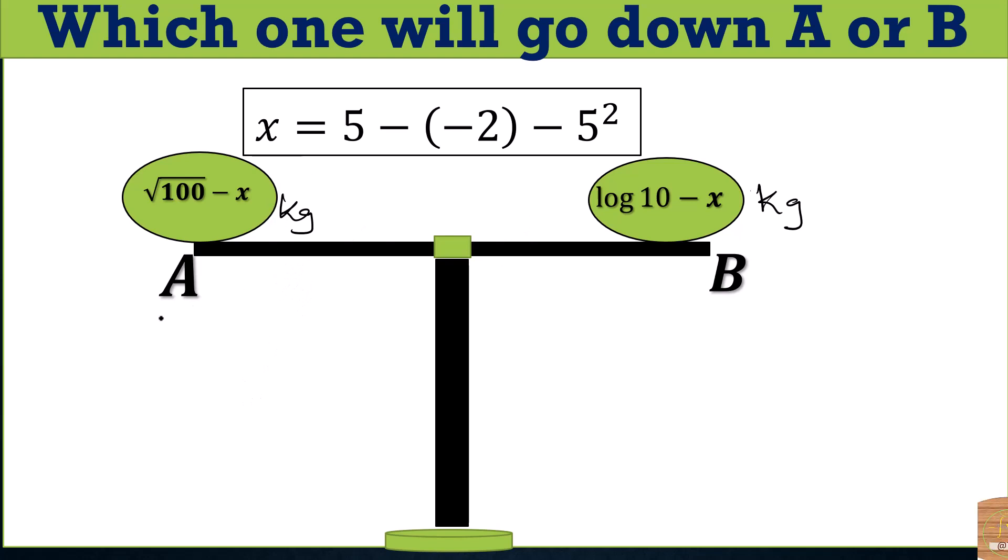So we have A and B. The thing here is that if the mass of B is bigger than that of A, B will come down. And if A is bigger than B, A will go down. Alright, so let's look at the mass of A.